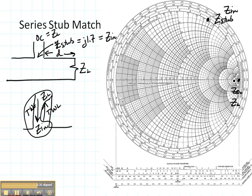So here I am at the load. I want to go towards the generator like so until I reach my input. And that's going to be the distance L, the length of the stub. Well, let's calculate that. L is going to be this value and I'm going towards the generator.